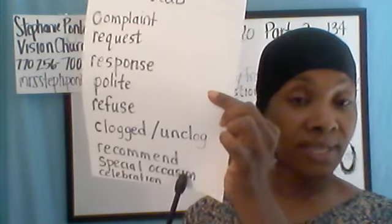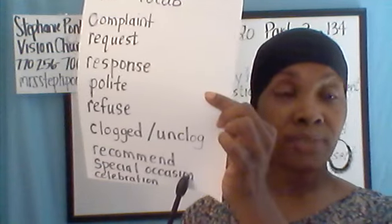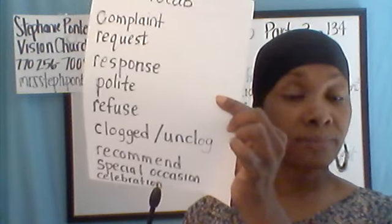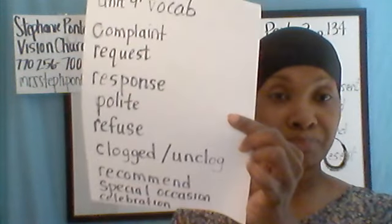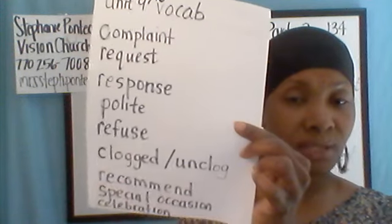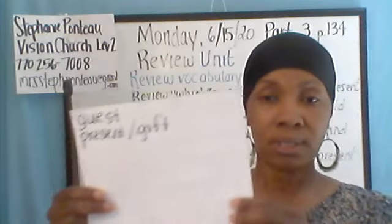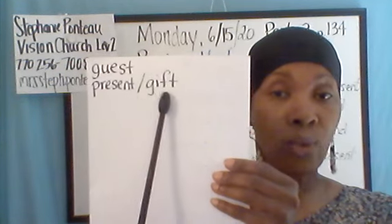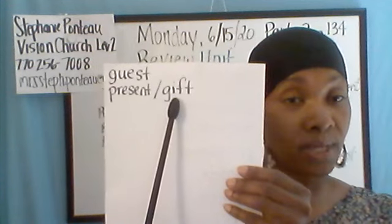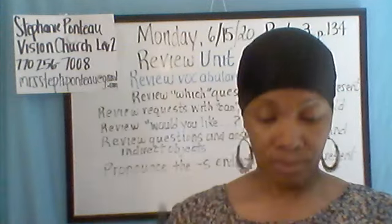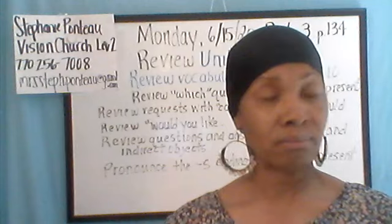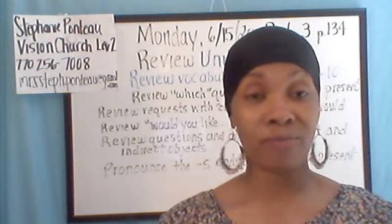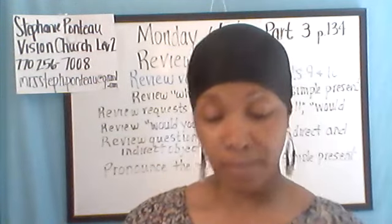Special occasions are things that we celebrate — in unit 10, we talked about a graduation party, and there are all types of special occasions. A celebration is the party or event. Guests are the people that you invite. A present or gift means the same thing — it's something that someone gives you. In unit 10, Celia graduated and she got some presents at her graduation party — perfume, flowers, and a card. So those are a few of the vocabulary words I wanted to review.